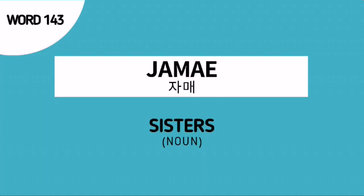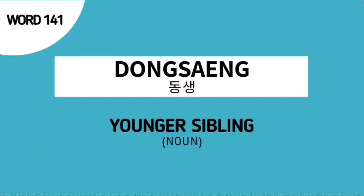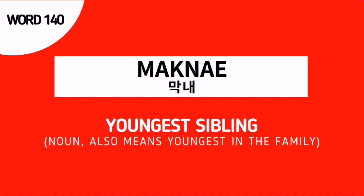Word number 145 is Emo, the Korean noun for aunt. Word number 144 is Samchon, the Korean noun for uncle. Word number 143 is Jamhae, the Korean noun for sisters. Word number 142 is Youngjae, the Korean noun for brothers. Word number 141 is Dongsaeng, the Korean noun for younger sibling. And the last for this review is word number 140, Maknae, the Korean noun for youngest sibling — it can also mean the youngest in the family or group.